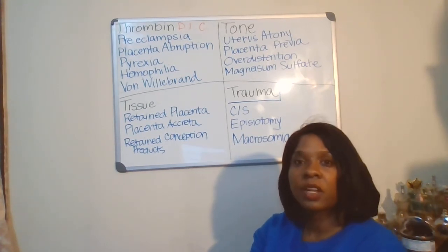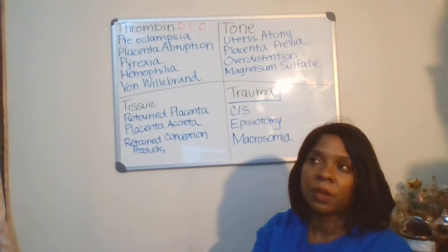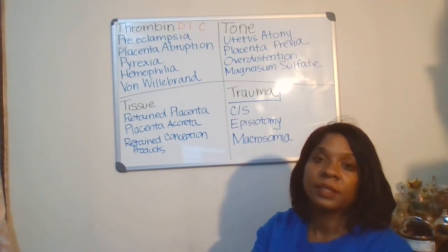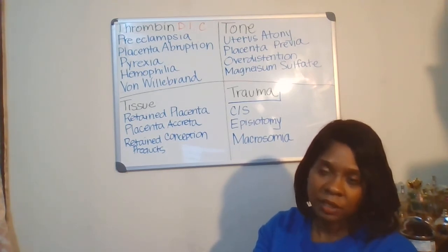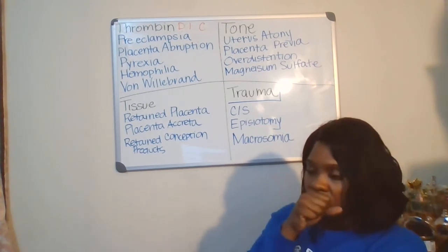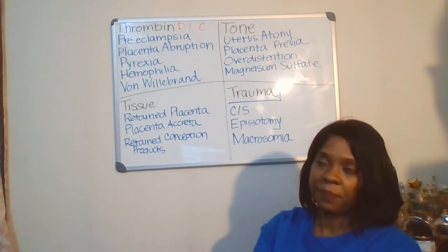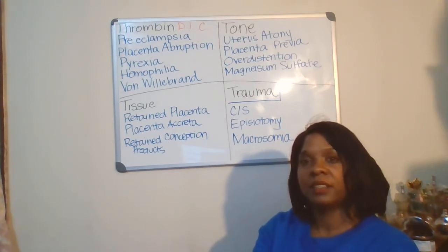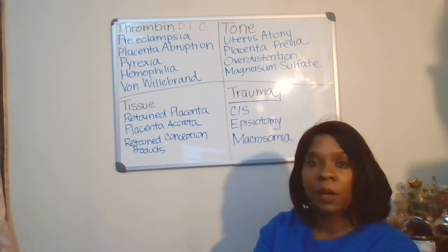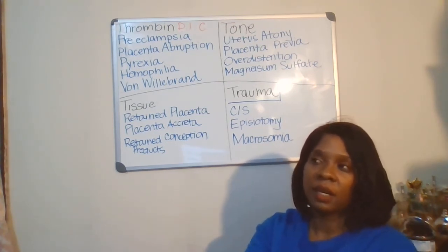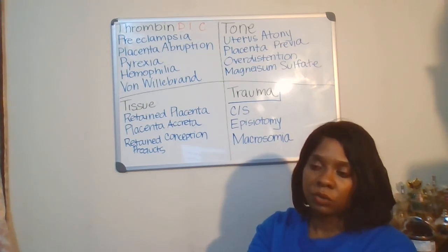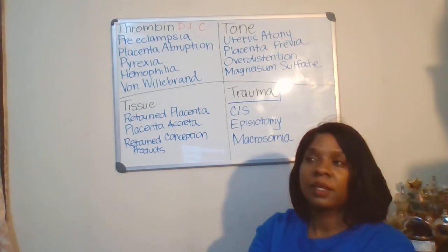Another condition associated with thrombin is placental abruption. Placental abruption is when the placenta detaches from the wall of the uterus. There is no known reason for placental abruption; however, there are risk factors. What happens is that the placenta separates from the wall of the uterus so much so that blood pools — it creates a big puddle of blood in between the wall and the uterus, and it's very painful.